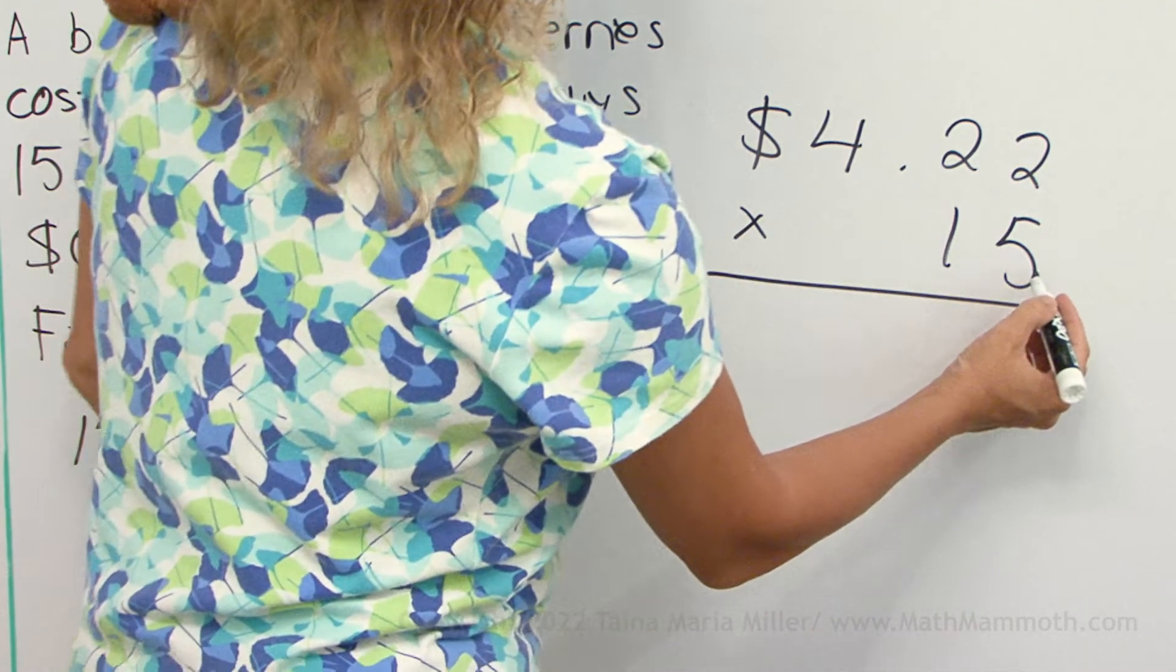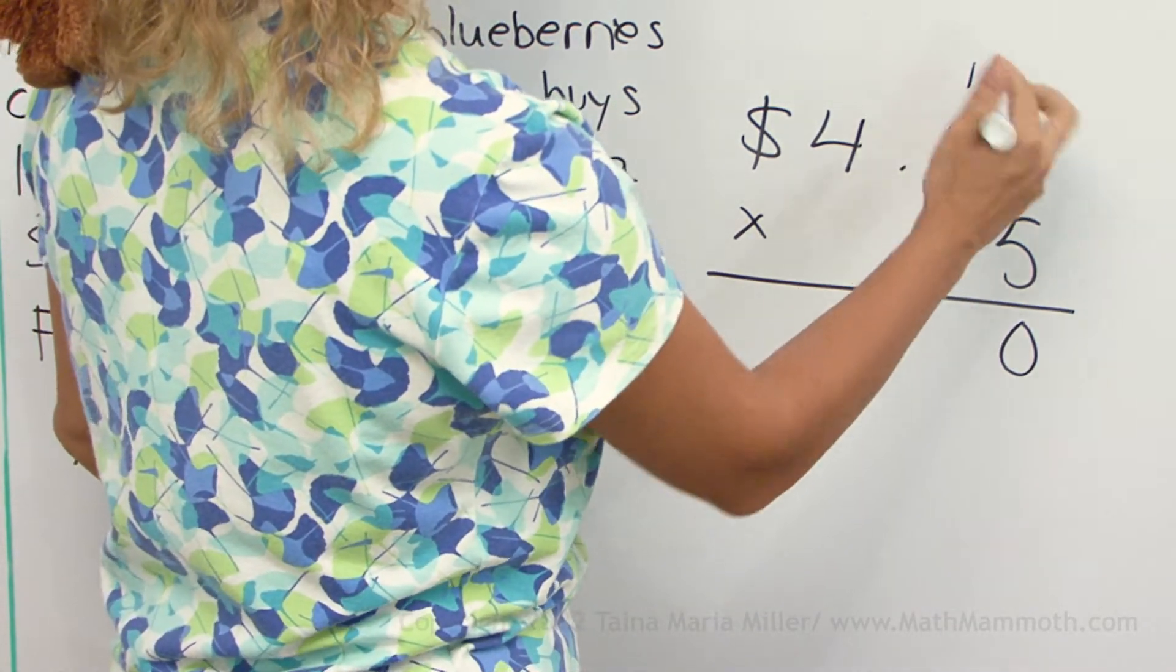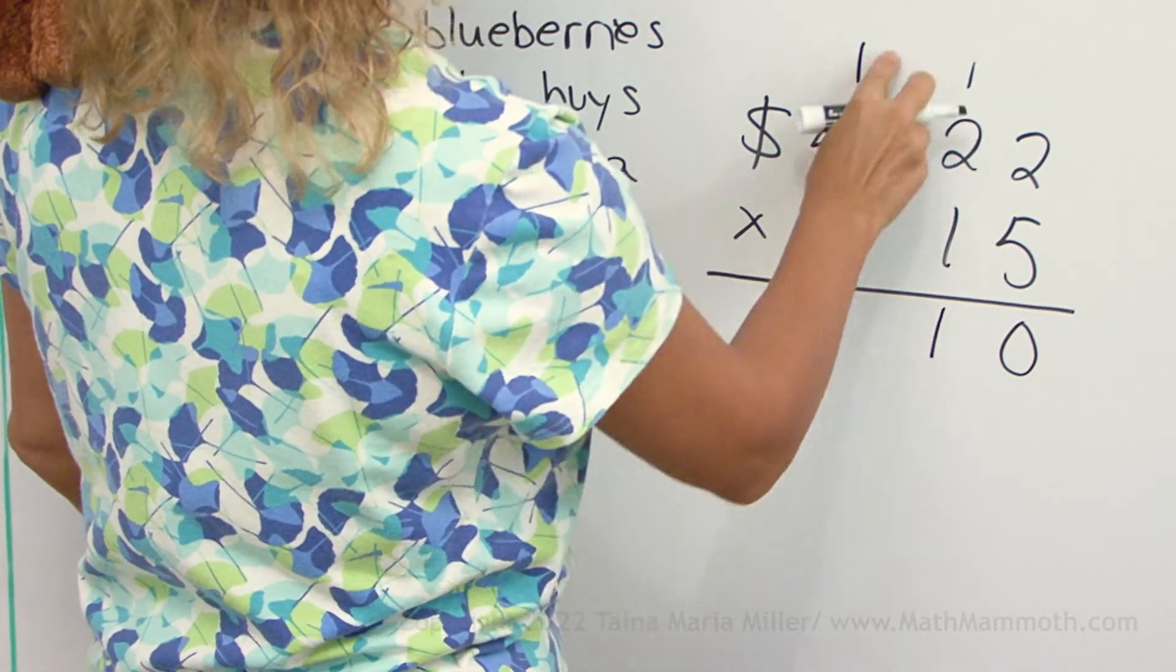Alright. 5 times 2 is 10. 5 times 2 is still 10 and then one more, 11. And then it's 21.